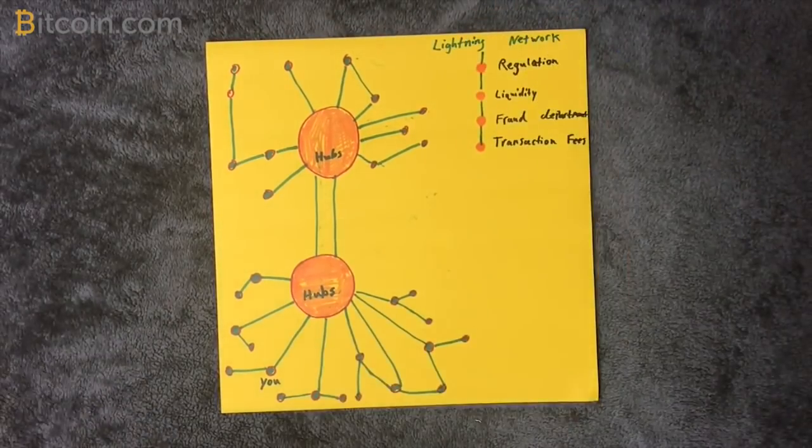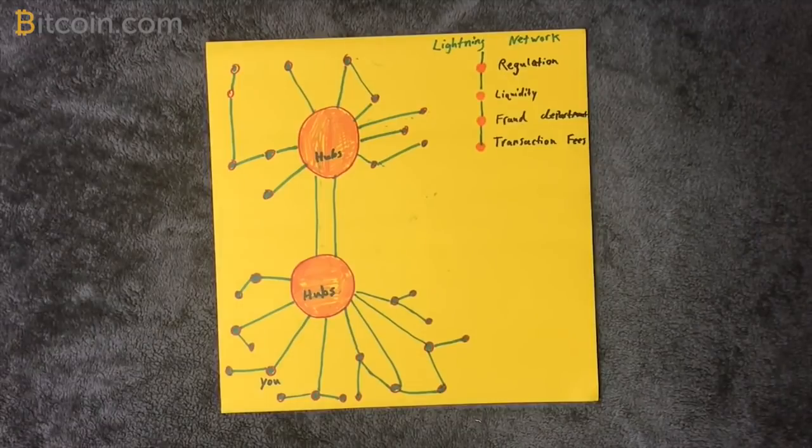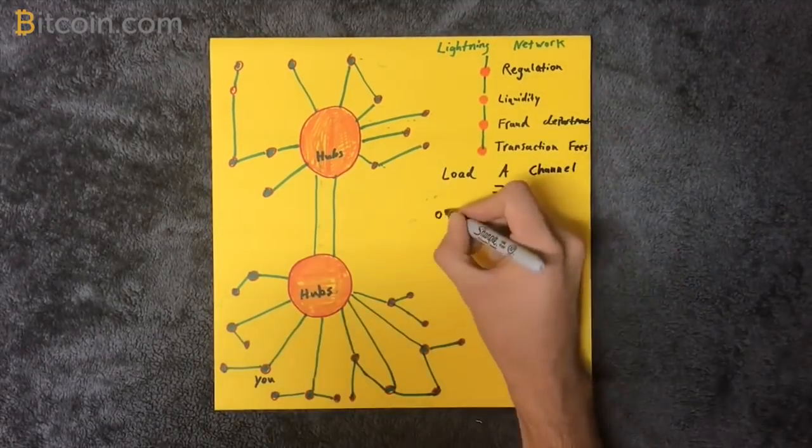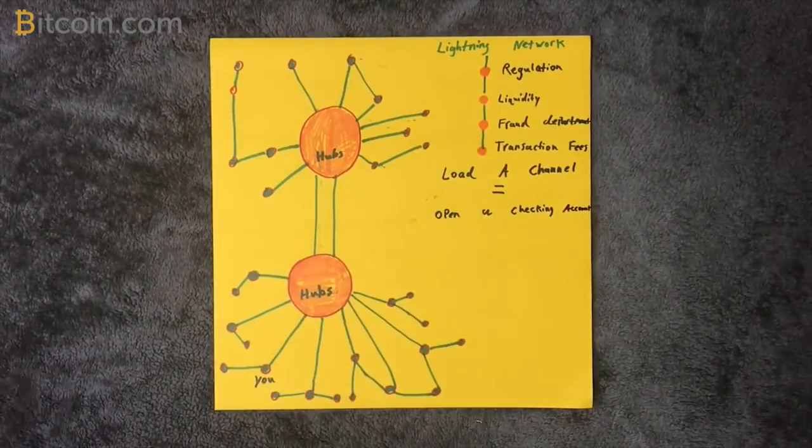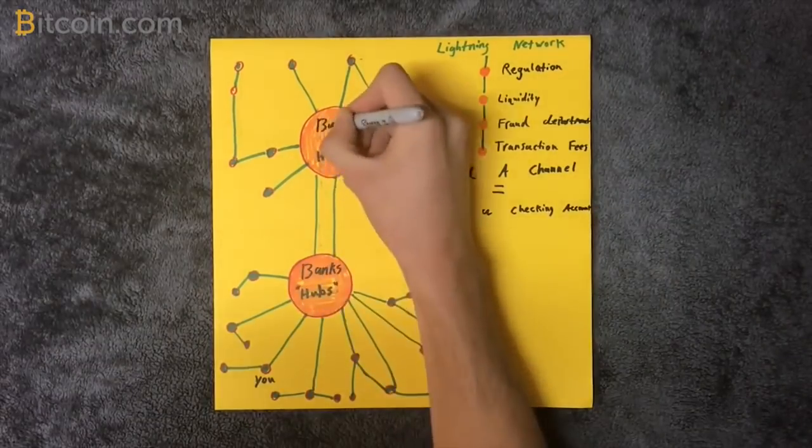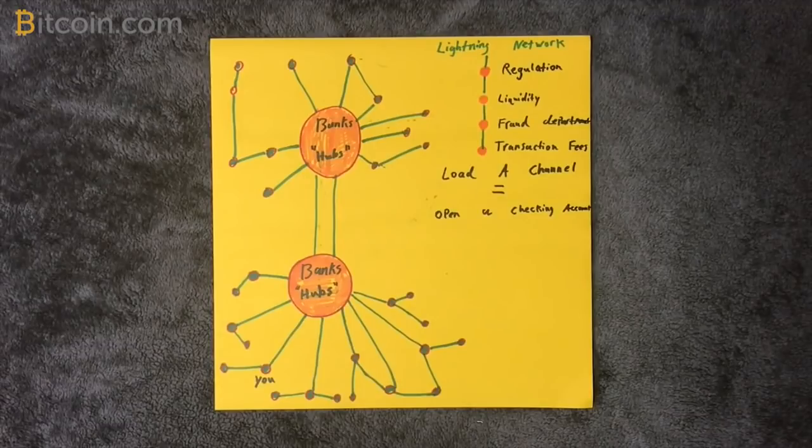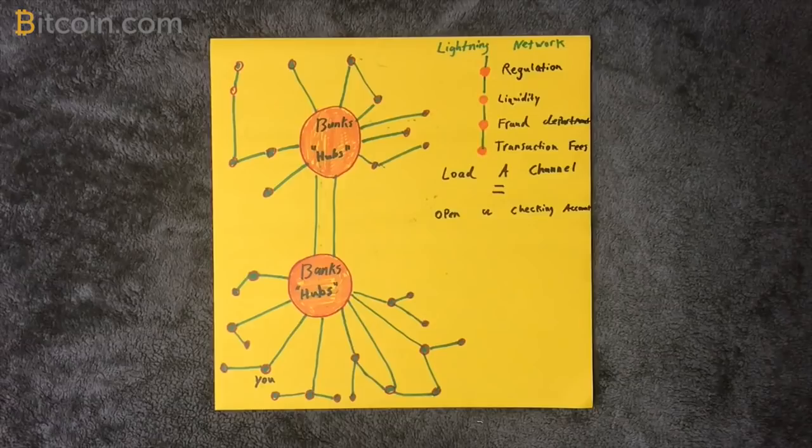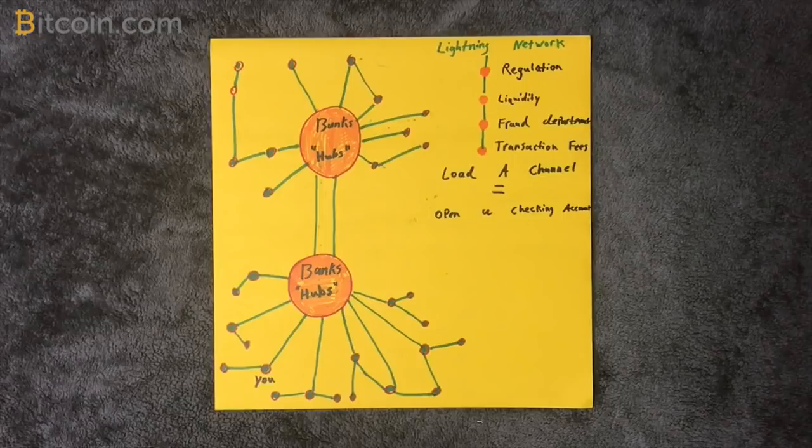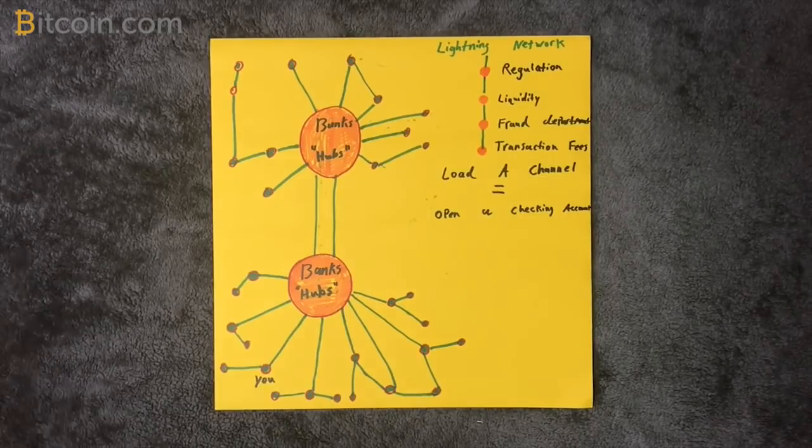Just replace the term 'open channel' with 'checking account.' These Lightning Network hubs will be run by the same financial institutions that Bitcoin was made to challenge. The banks aren't fighting Bitcoin because Bitcoin will be the new banking system.